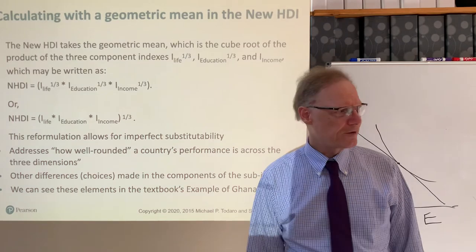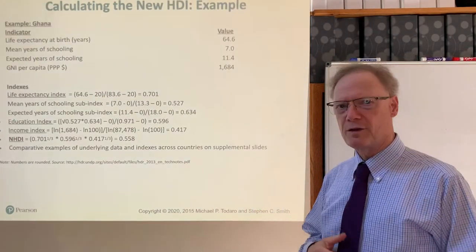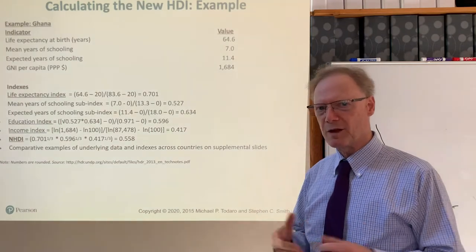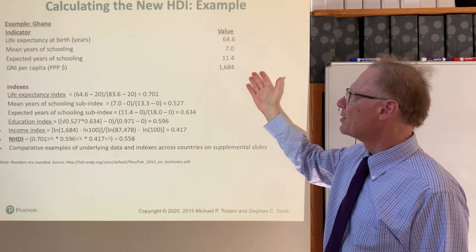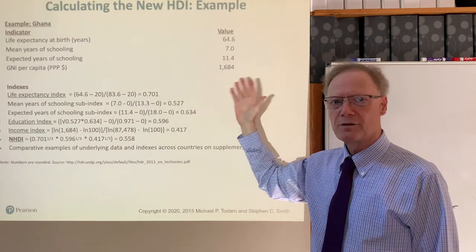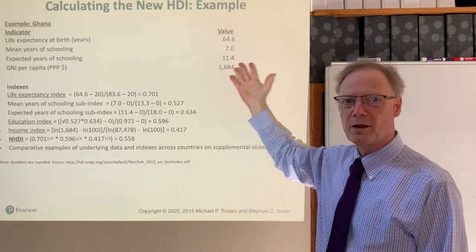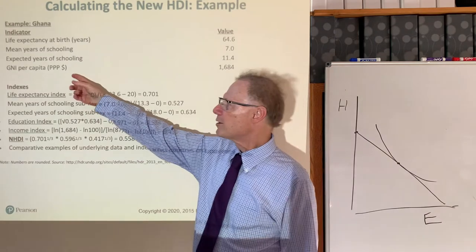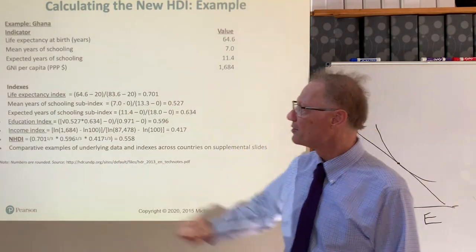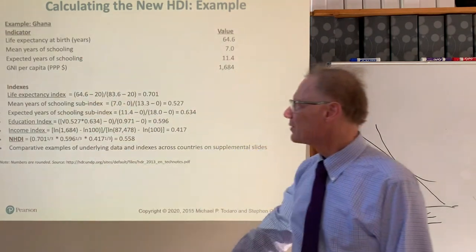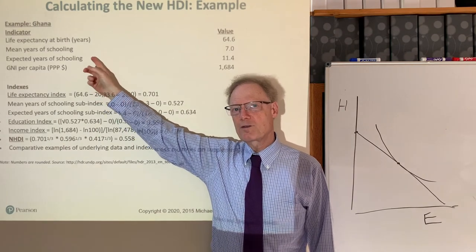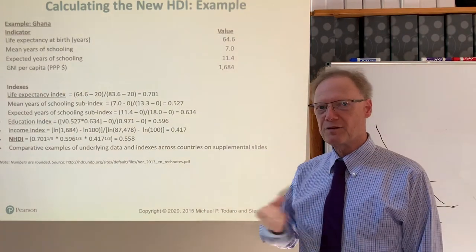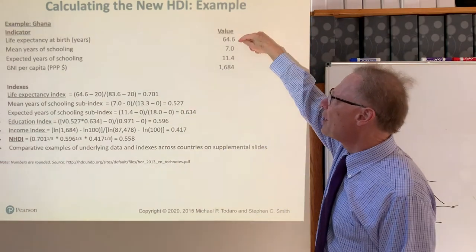I think it's useful to explain what's going on by means of an example, which will give us an opportunity to delve into the Human Development Index in more detail. The example in the text is the case of Ghana. The data is a few years old, but it hasn't changed drastically and the idea is to be indicative of how this works. There are three components: gross national income per capita in purchasing power parity terms, life expectancy at birth representing health, and two parts representing education — the average level of education in the country and the expected level of schooling for a child born now, a kind of schooling expectancy.